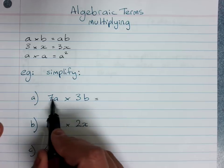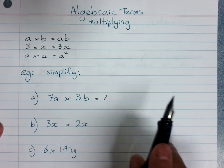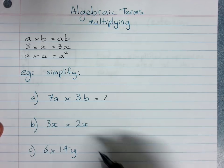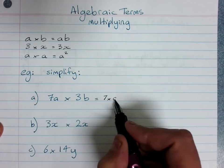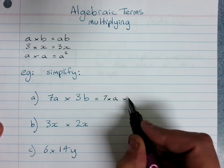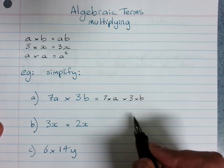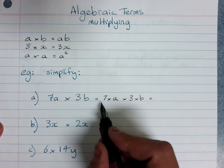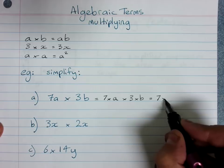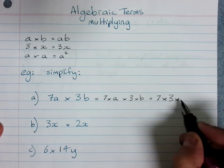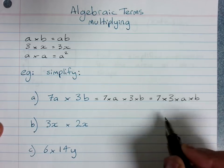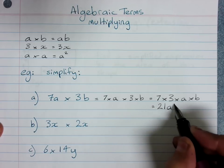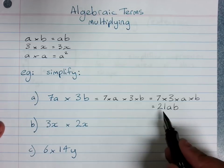So if I wrote this with all the times signs, which I wouldn't normally do, I'd write 7 times a, which is 7a, times 3 times b. Now I'm allowed to rearrange multiplication so let's get all the numbers out the front: 7 times 3 times a times b. So 7 times 3 is 21 and I don't put the times signs in and I've got a and b. 21ab.